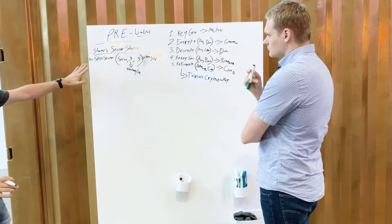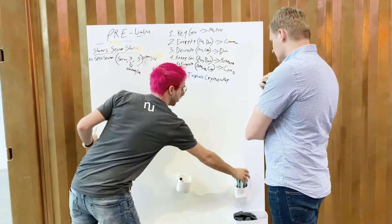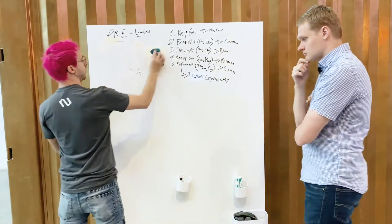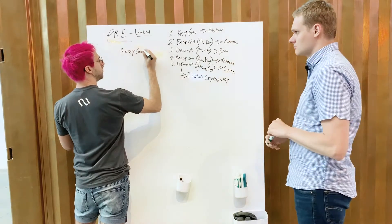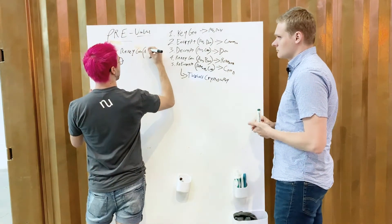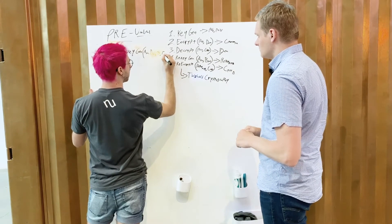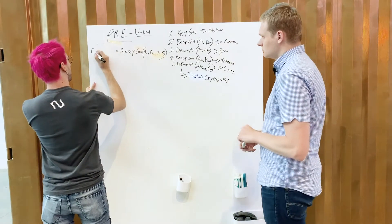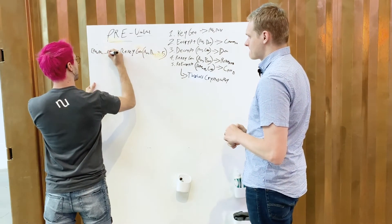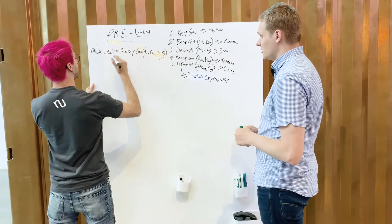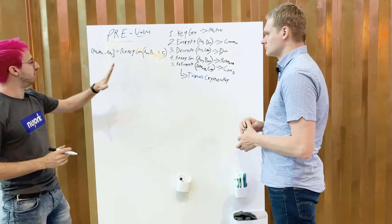We do the same for the re-encryption key. Re-key gen now takes Alice's private key, Bob's public key, and a threshold — say three of five — and on output we get a list of shares. Alice performs this re-key gen and generates five different re-encryption key shares, which we call KFrags in our network.